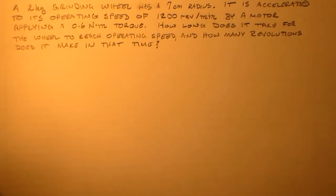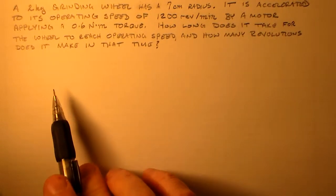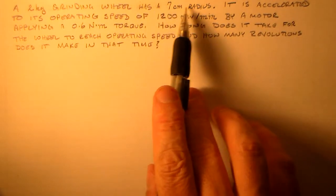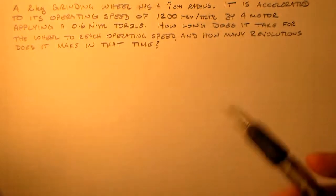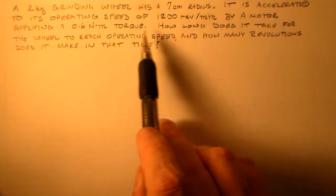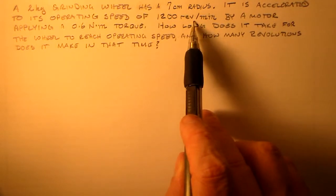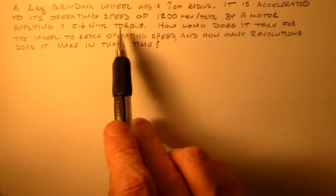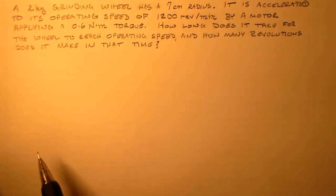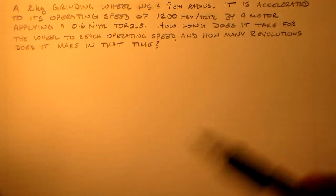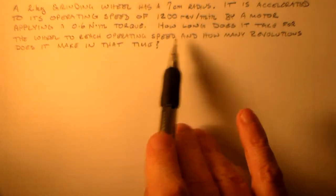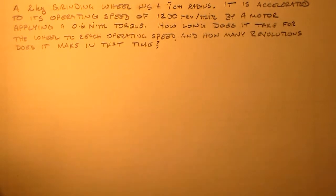For the first example of this semester, what I'd like to look at is this problem. A 2-kilogram grinding wheel that has a 7-centimeter radius is accelerated to its operating speed of 1,200 revolutions per minute by a motor that applies a 0.6-newton-meter torque. I'd like to figure out how long it takes the wheel to reach the operating speed and how many revolutions it goes through in that time.